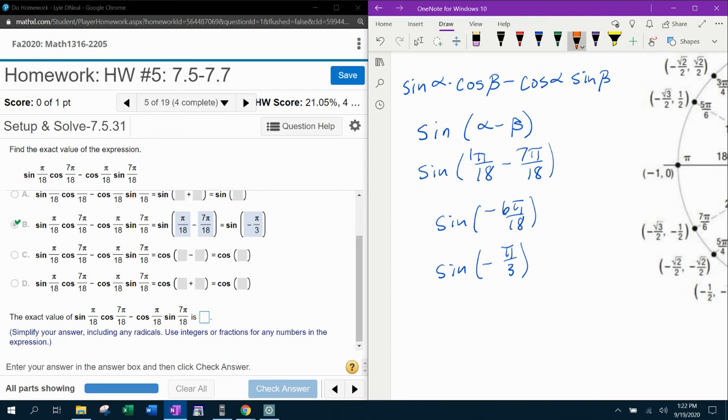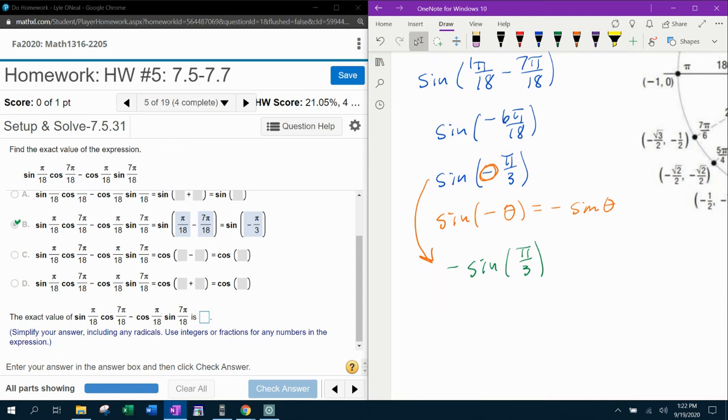So let's recall that sine of negative theta is equal to negative sine of theta. That's an even odd property we've talked about, which allows us to deal with this negative angle here. So then this expression can be rewritten as negative sine of pi over 3. And at this point, all I need to do is go to my unit circle at pi over 3 and find the y-coordinate and change the sign.